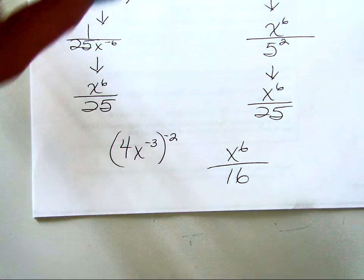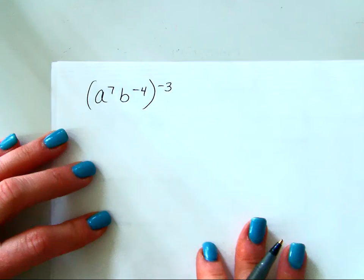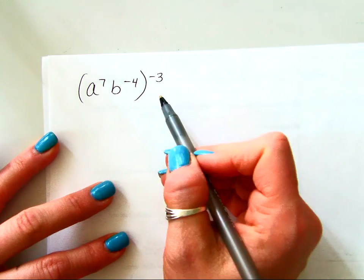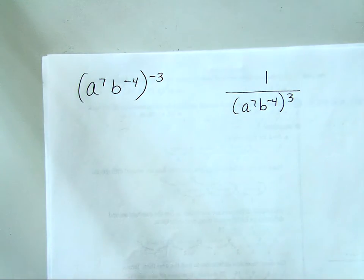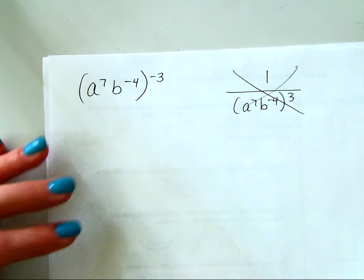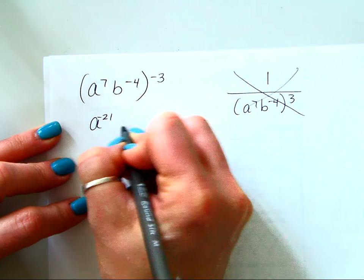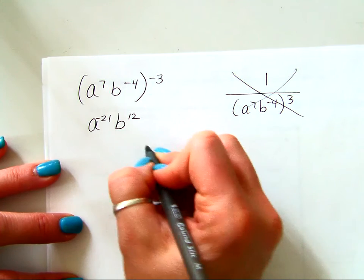Let's get a little trickier. If I have a to the 7th, b to the negative 4th, to the negative 3rd, my advice is do the multiplication first, then move what you have to. A to the 7th times negative 3 gives a to the negative 21st, and b to the negative 4th times negative 3 gives b to the positive 12th. So only the A needs to move, giving b to the 12th over a to the 21st.